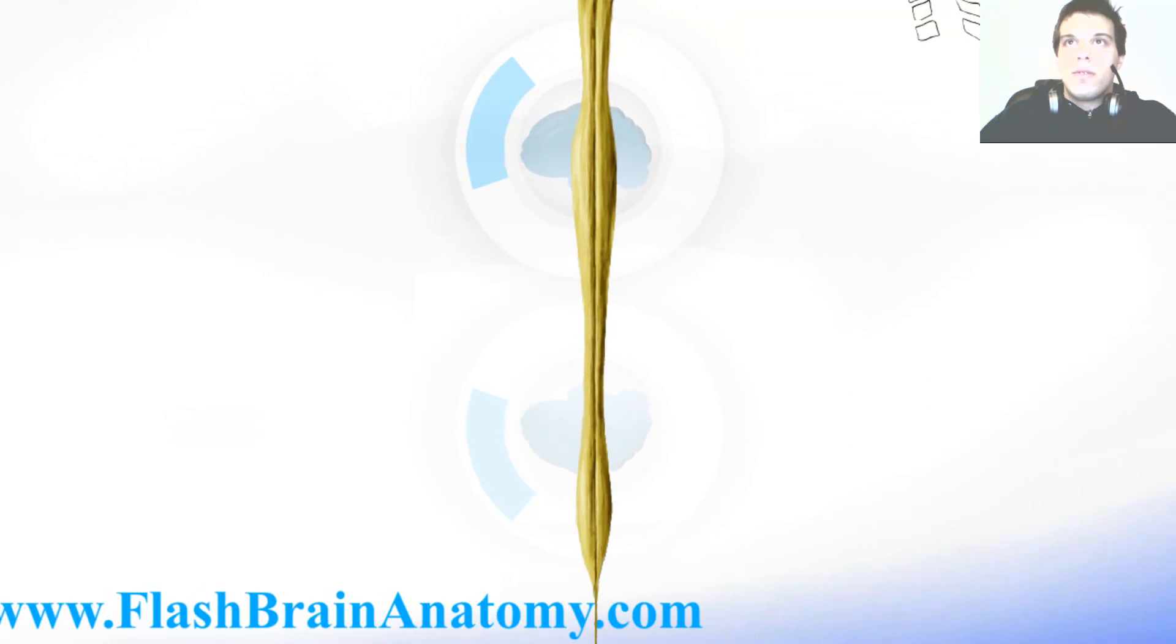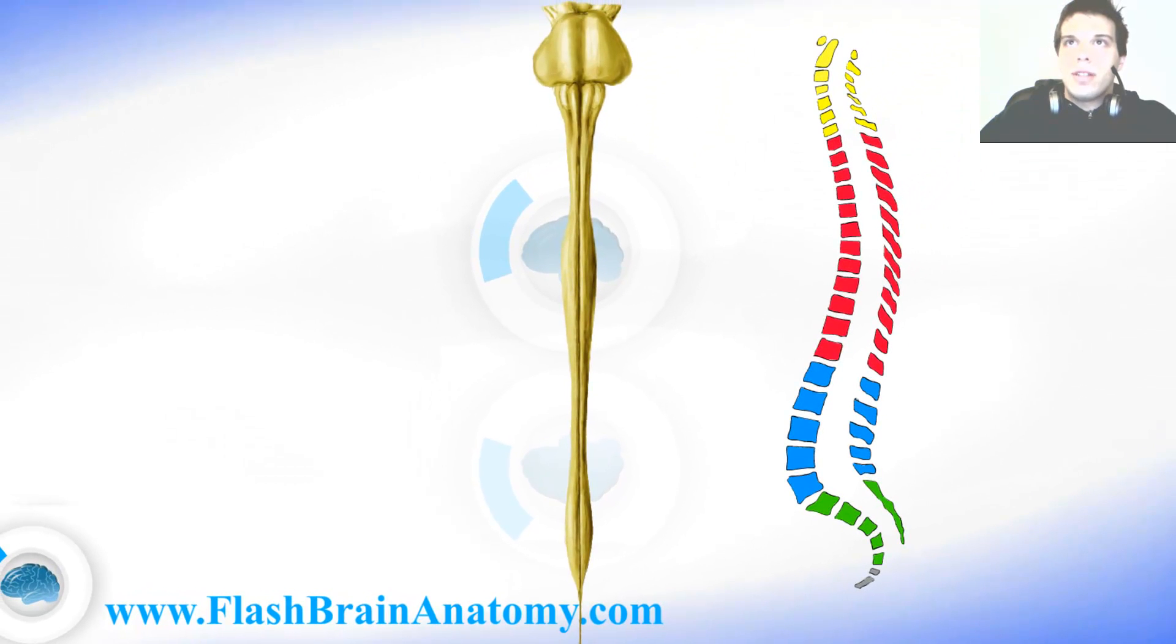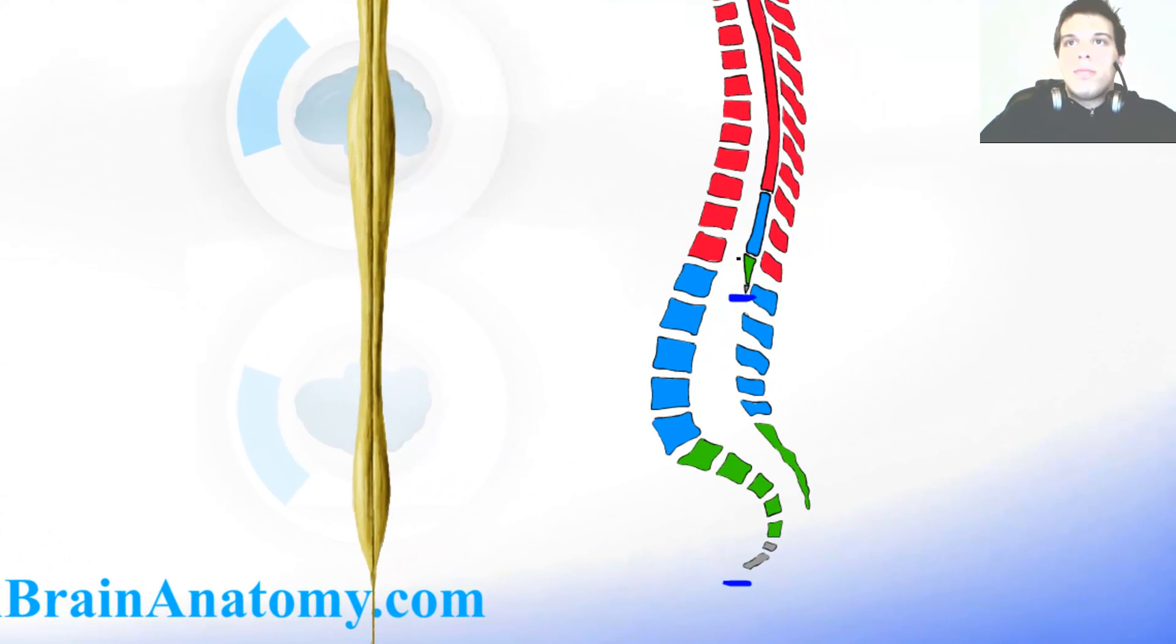Now I will illustrate the vertebral column and the spinal cord inside of it. As you can see the spinal cord is shorter than the vertebral column. And because of that we have the last lumbar spinal nerve leaving here, leaving the spinal cord and leaving the vertebral column here.